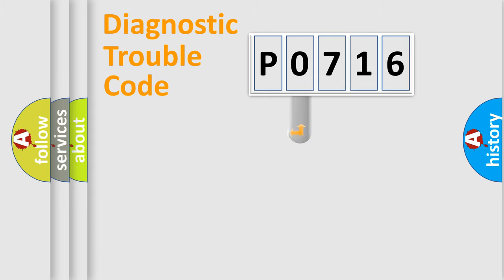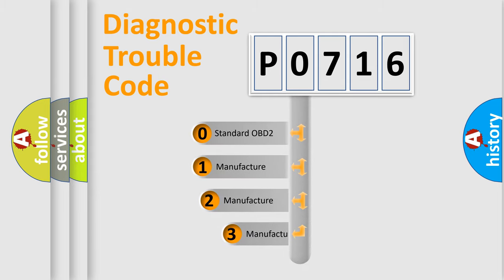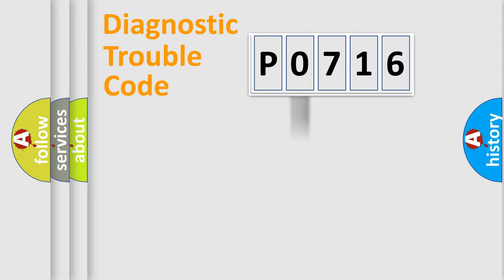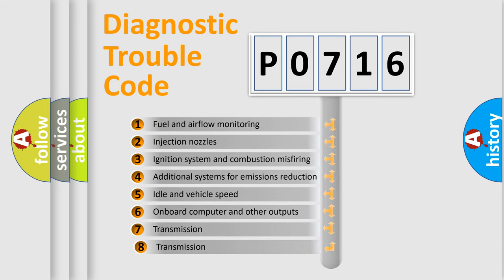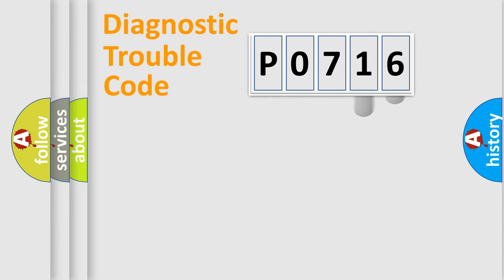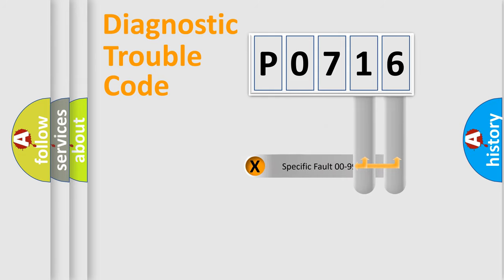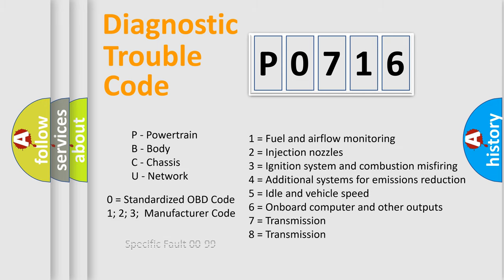This distribution is defined in the first character of the code. If the second character is zero, it is a standardized error. In the case of numbers 1, 2, or 3, it is a manufacturer-specific error expression. The third character specifies a subset of errors. The last two characters define the specific fault within the group. This division is valid only when the second character is zero.